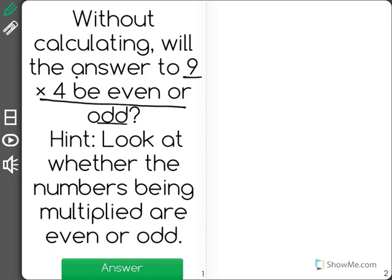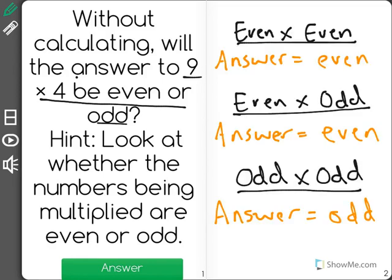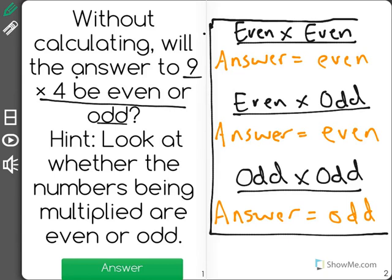I'm going to write out a little chart over here to the right. Now this chart is just a little hint that you could use to help you know whether your answer to a multiplication problem, which we call a product, should be even or odd. If you're multiplying two even numbers, your answer will be even.